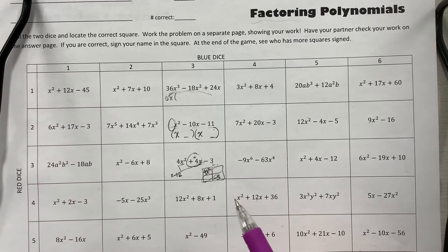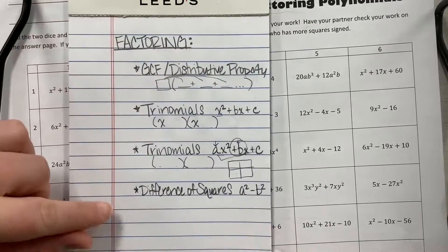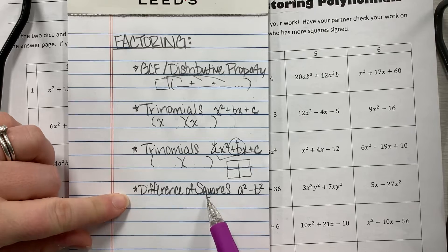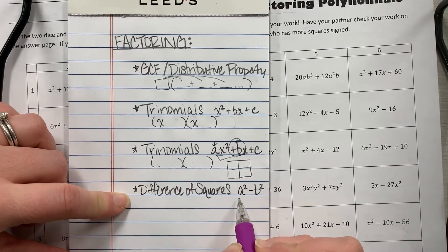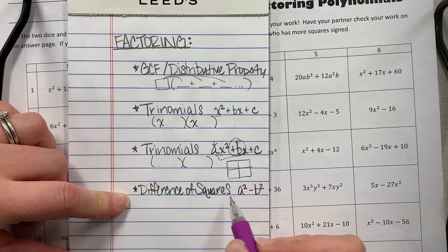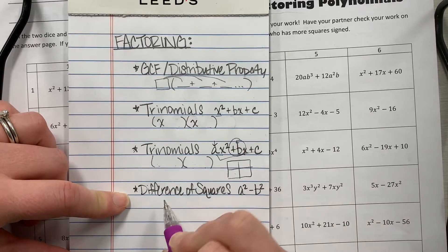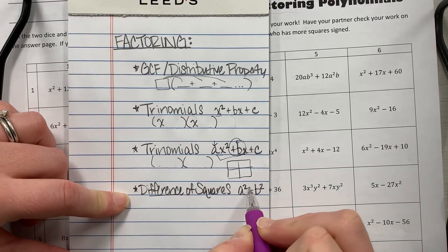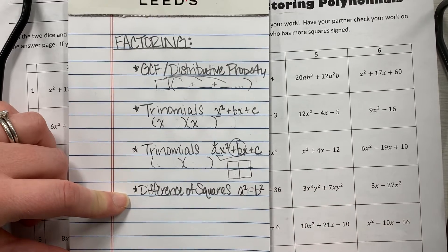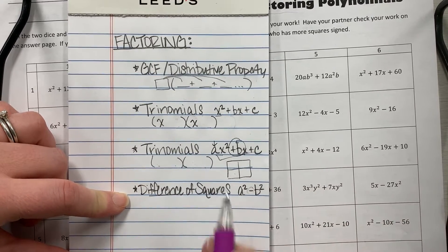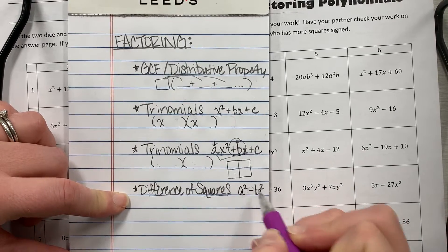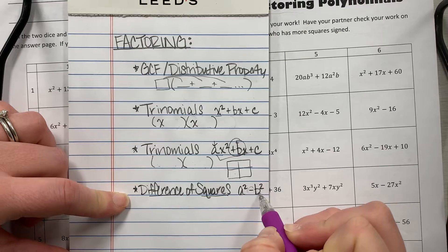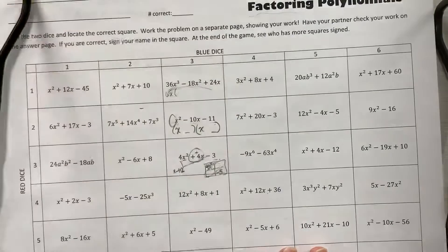And so then the last category, the newest category, is if it's a difference of squares. In order to be this last one, which to me is by far the easiest one, you have to have the difference—you have to have subtraction between your two pieces. It can only be two, and you have to have perfect squares, like something that can multiply a times a and b times b.